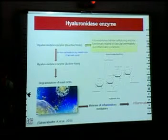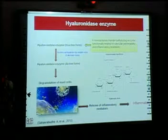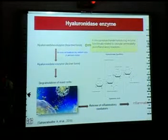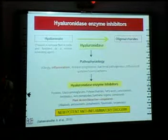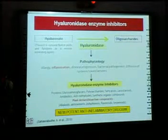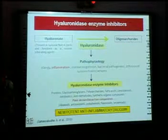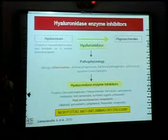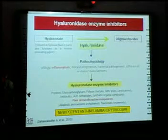Talking about the second enzyme — hyaluronidase — it has a different mode of action compared to lipoxygenase. It is a mucopolysaccharide hydrolyzing enzyme. Upon in-vivo activation, it can degranulate mast cells, thereby releasing inflammatory mediators and imparting inflammation. On the other hand, it can hydrolyze hyaluronic acid, which is abundantly present in the synovial fluid of our joints, functioning as a viscous lubricating agent, giving rise to many pathophysiological conditions including inflammation. Therefore, the importance of hyaluronidase enzyme inhibitors comes into view. There are already known hyaluronidase inhibitors, and plant-derived bioactive components take a major place among them, identified as new potent anti-inflammatory drugs.